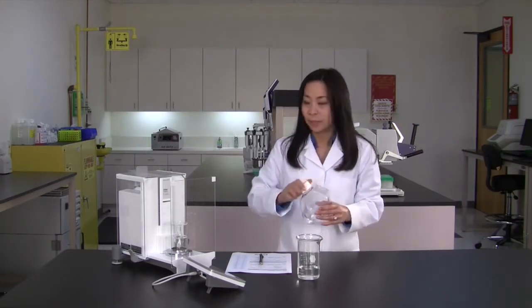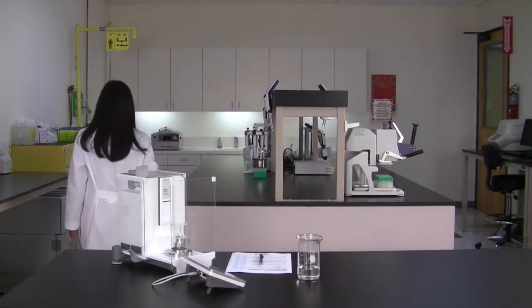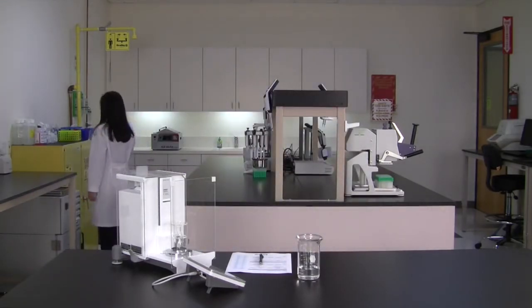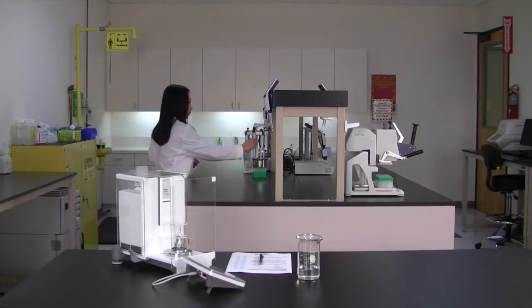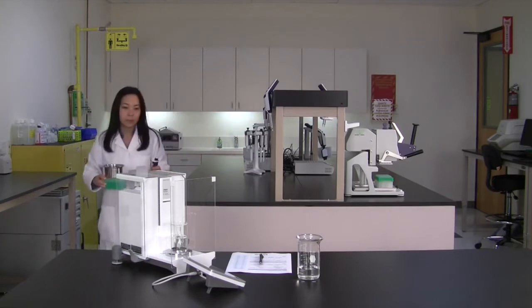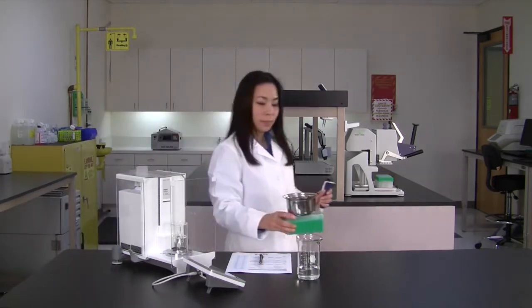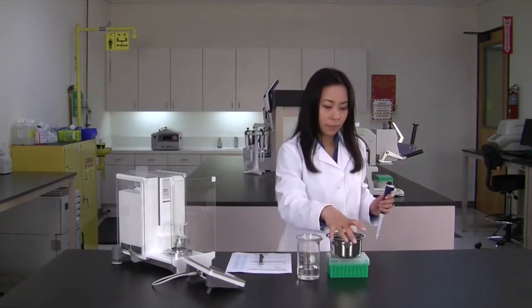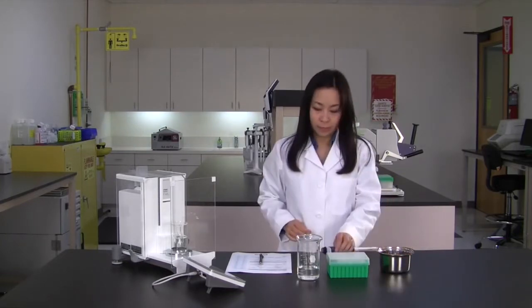For 100 microliter pipettes and larger, you can use a 5 place balance. For smaller volume pipettes, a 6 or 7 place balance is required. You'll also need an evaporation trap or vessel, some deionized water, and an area to work in that's free from drafts, direct sunlight, and vibration.